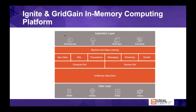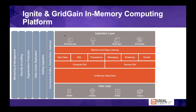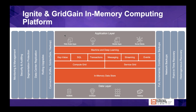Layered on top of Apache Ignite, we provide GridGain, which adds enterprise-type features including management and monitoring, advanced security and auditing, zero downtime rolling upgrades, and tools to replicate data across multiple clusters or regions. There's also a host of additional features around persistence, allowing you to turn this in-memory cache into an in-memory database and take snapshots or backups of the in-memory data.